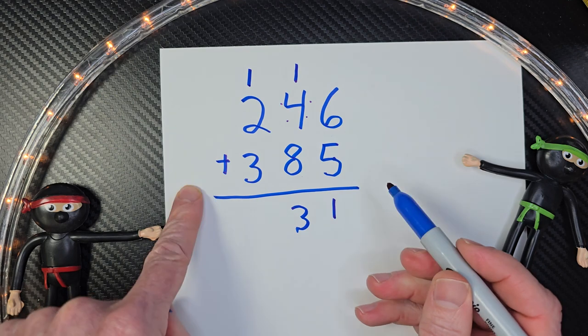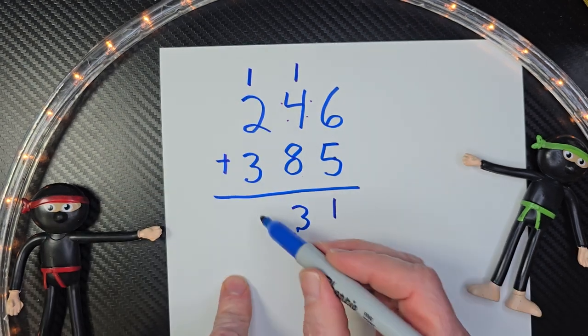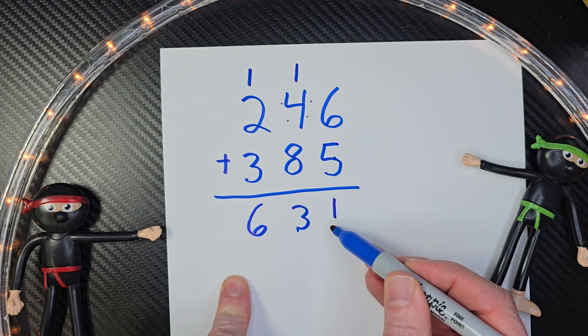Alright, then we add the hundreds. We're almost done. So three, four, five, six. So we have 631. You ready to do just one more?